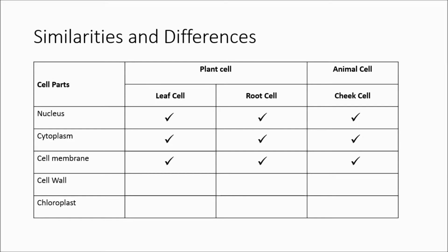What are the differences between plant and animal cells? Well, all plant cells, whether it is the leaf cell or the root cell, they all have cell walls. However, animal cells do not have cell walls. Not all plant cells have chloroplasts. Leaf cells have chloroplasts, but root cells do not have chloroplasts. Animal cells also do not have chloroplasts.